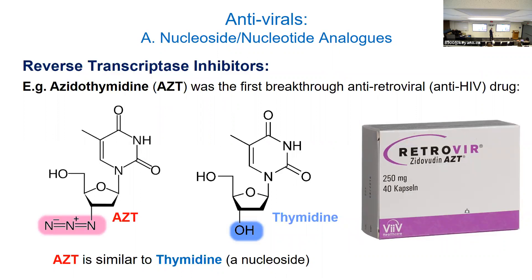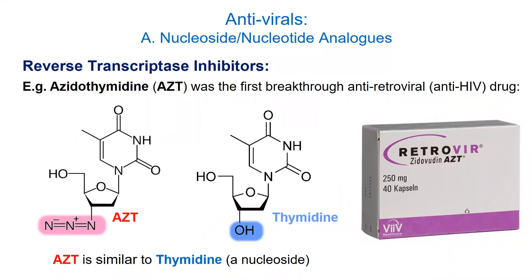There are many nucleotide/nucleoside analogs out there. Some of the most famous ones are those developed for HIV. AZT looks like thymidine — azidothymidine — and was actually the first drug used to treat HIV infections. HIV emerged most places in the 1980s, and this drug came out around 1991. Up until then, getting an HIV infection was essentially a death sentence — once you started getting ill, you knew there was a timeline. So this drug was revolutionary.